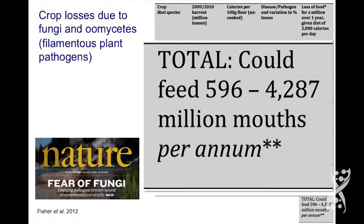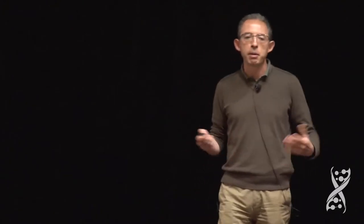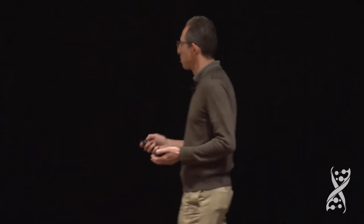I refer to these as filamentous plant pathogens, and they cause a lot of losses in agriculture. These numbers are taken from an article published by Matt Fisher and colleagues. In the supplementary table, they estimate losses caused by various pathogens like rice blast and potato blight. Summing up these numbers, the most conservative estimate is that enough food to feed about half a billion people is lost to these pathogens.